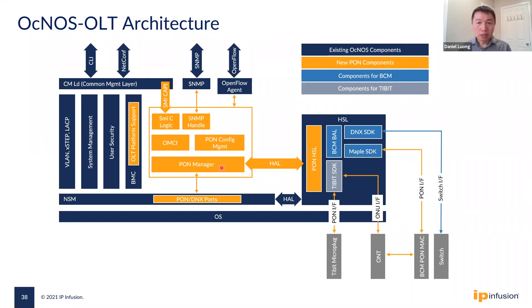We simplify PON management by introducing the concept of subscriber service flow. When a new subscriber comes and needs a service, a subscriber service flow needs to be configured. The flow comes with its own QoS parameters and VLAN structure and can be set up quickly in a few commands. This hides the complexity of PON details, making configuration really simple for the user. On the northbound interface, we provide CLI, SNMP, NETCONF, and OpenFlow, allowing OpenOS OLT to be integrated into an existing network management system.